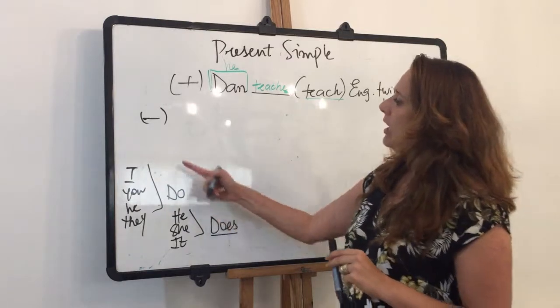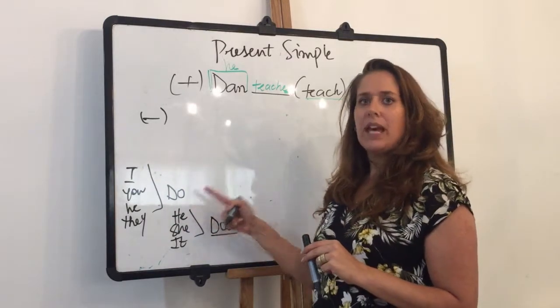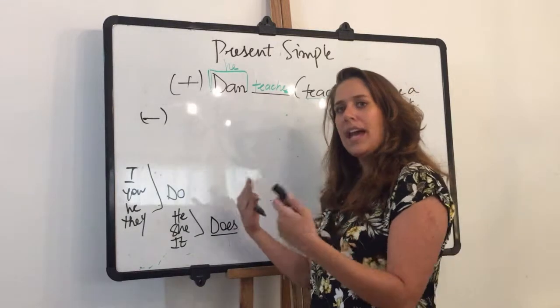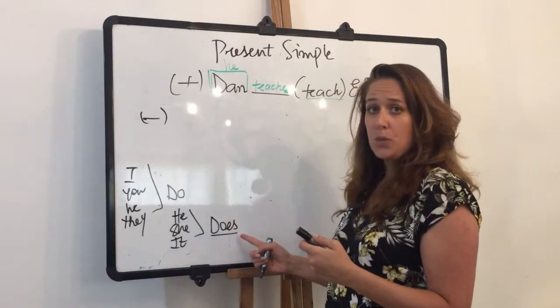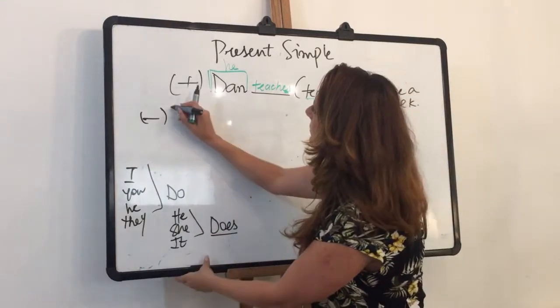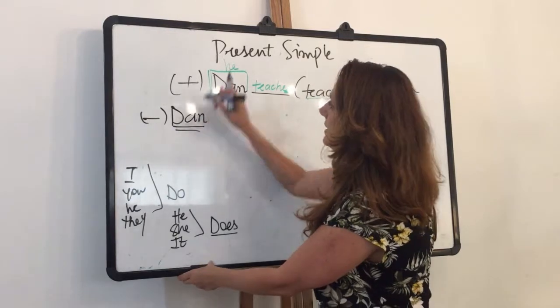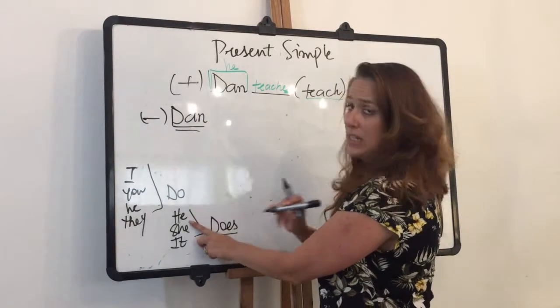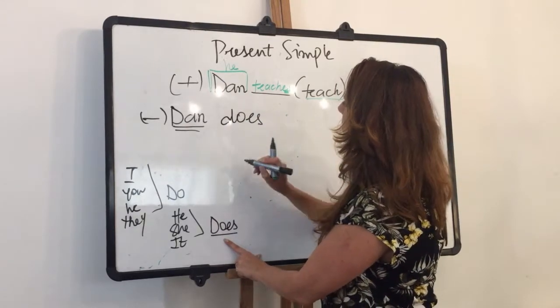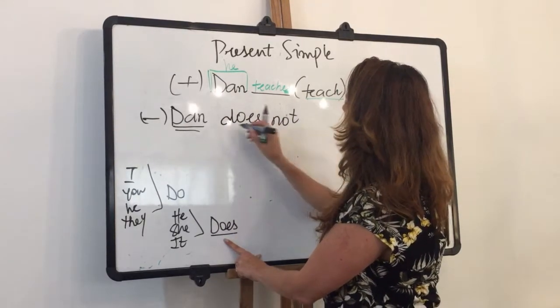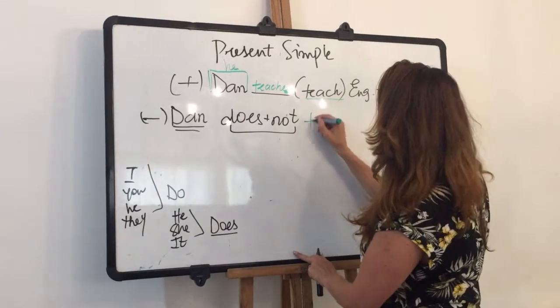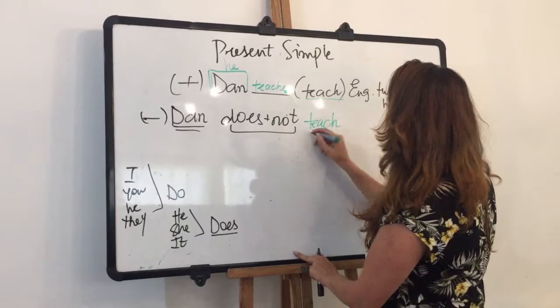So I have to remember that in negatives and questions, I have to use the auxiliary verbs. Okay. So I have Dan. Dan is a he. It goes in this group and it gets does. Does. Not. Or doesn't.